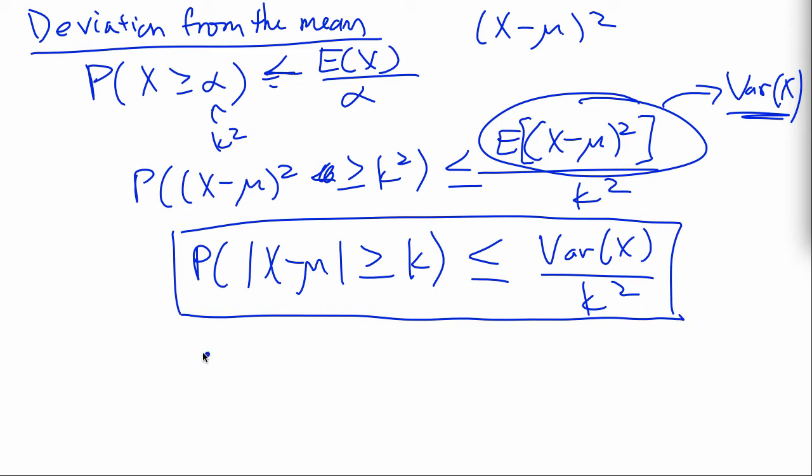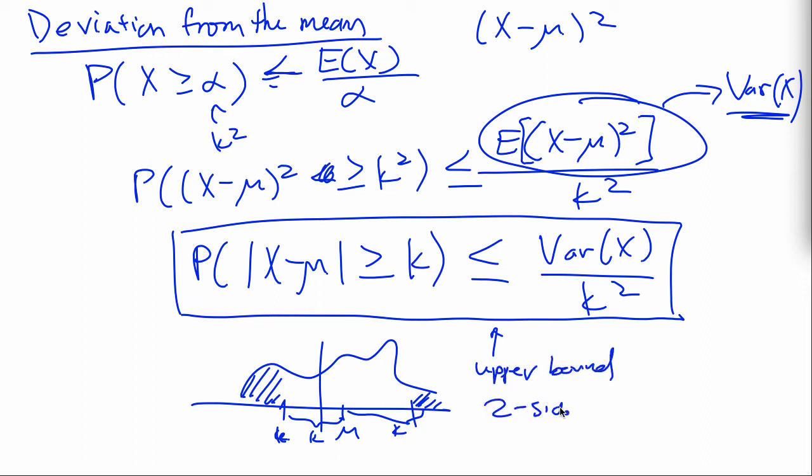So, note that Chebyshev's inequality is two-sided. It doesn't matter which side you're away from the mean. So, suppose this is a mean, then as long as you're a certain distance k, right? So, this part is k and this part is also k. Then it calculates this probability here. So, that's how Chebyshev's is two-sided. And it's an upper bound, right? Upper bound. Cool.